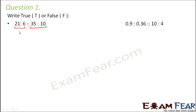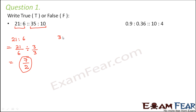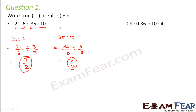For this we need to find out the values of each ratio. First let's calculate 21 is to 6, which equals 21 by 6. The HCF of 21 and 6 is 3, so dividing numerator and denominator by 3 gives 7 by 2. Similarly, 35 is to 10 equals 35 by 10. The HCF of 35 and 10 is 5, so dividing by 5 gives 7 by 2. Both are equal, therefore this is true.